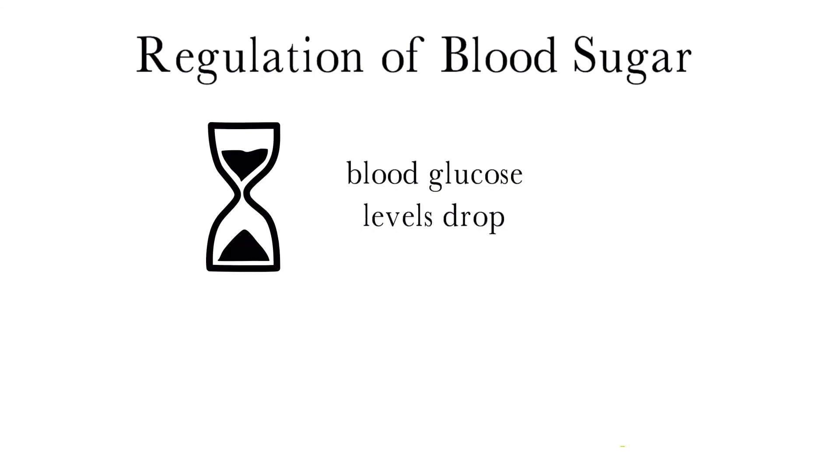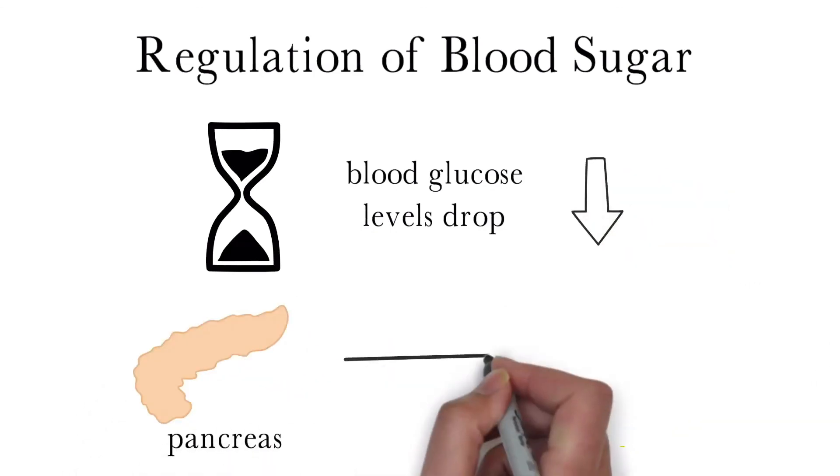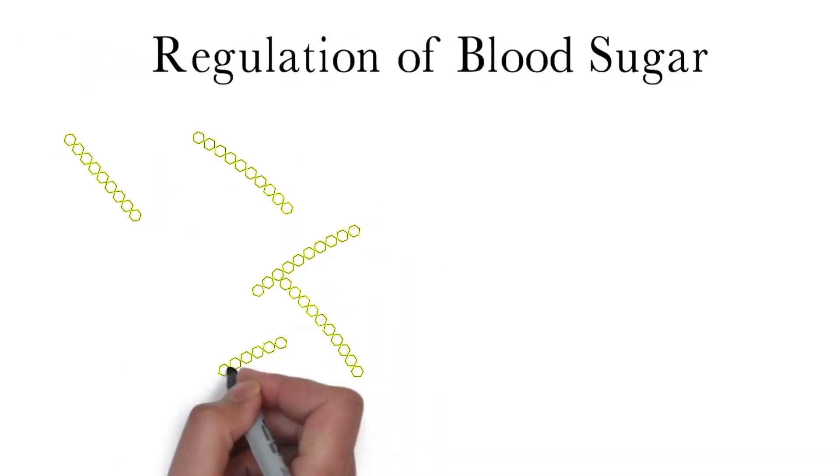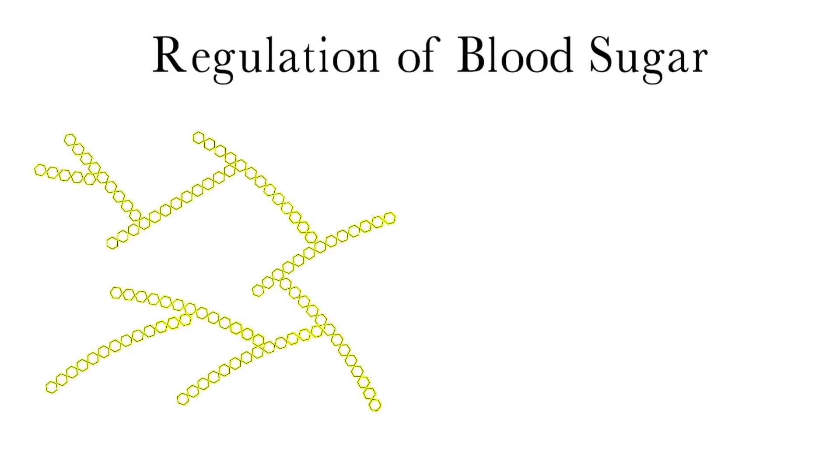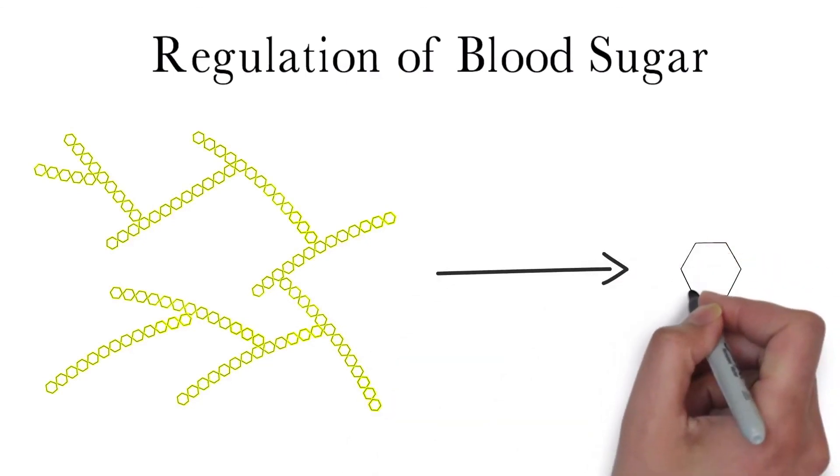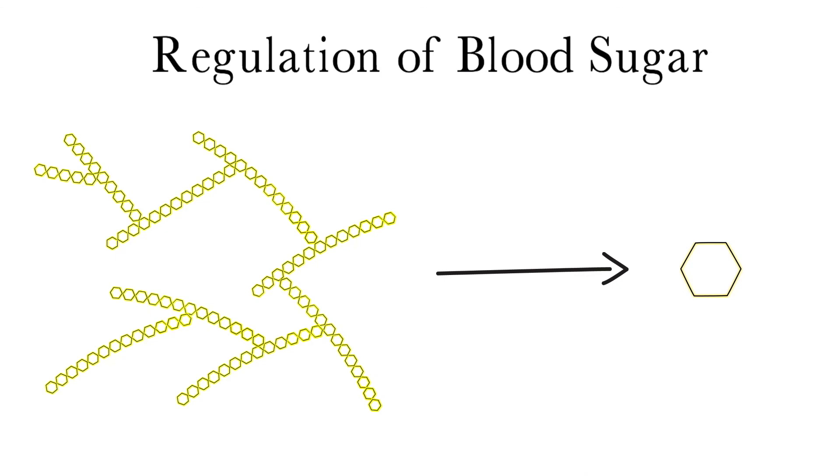As time goes on, blood sugar levels will decrease. This causes the pancreas to release another hormone called glucagon into the bloodstream. Glucagon stimulates the liver to break down glycogen into glucose, which enters the bloodstream, causing blood glucose levels to rise. This cycle occurs 24 hours a day even when you're sleeping.